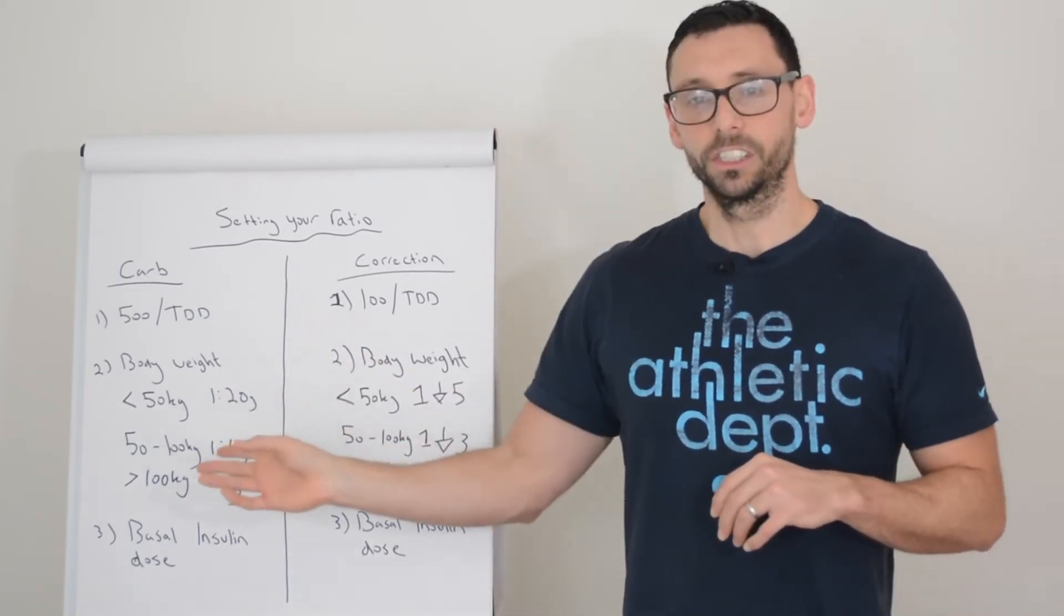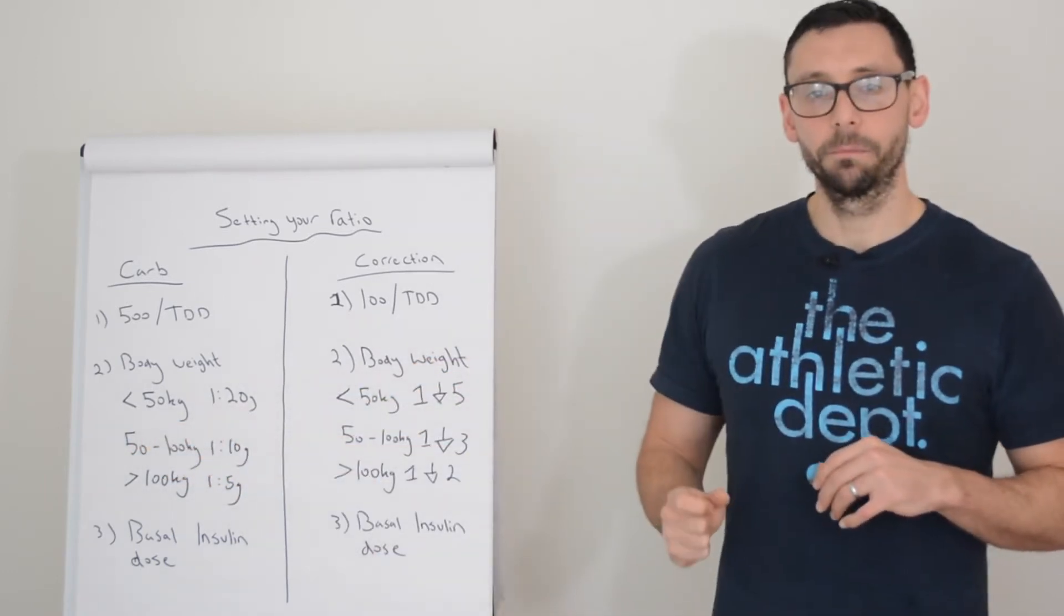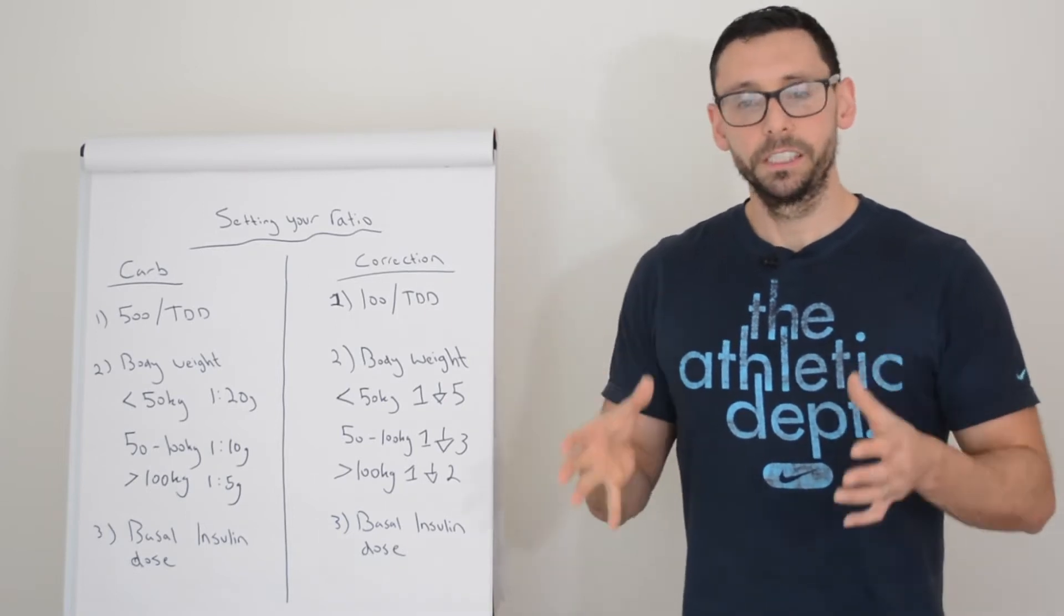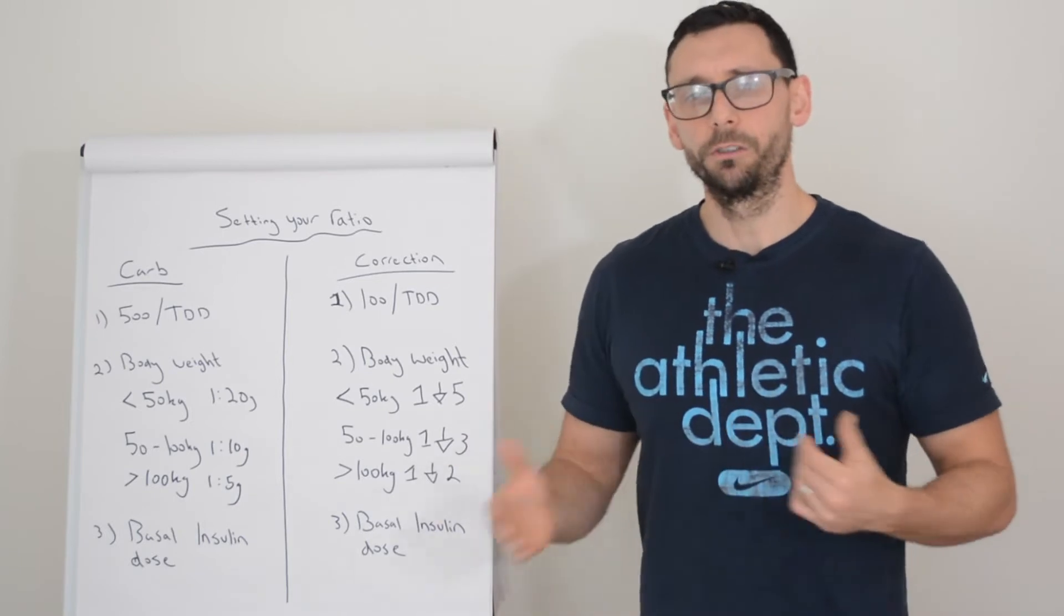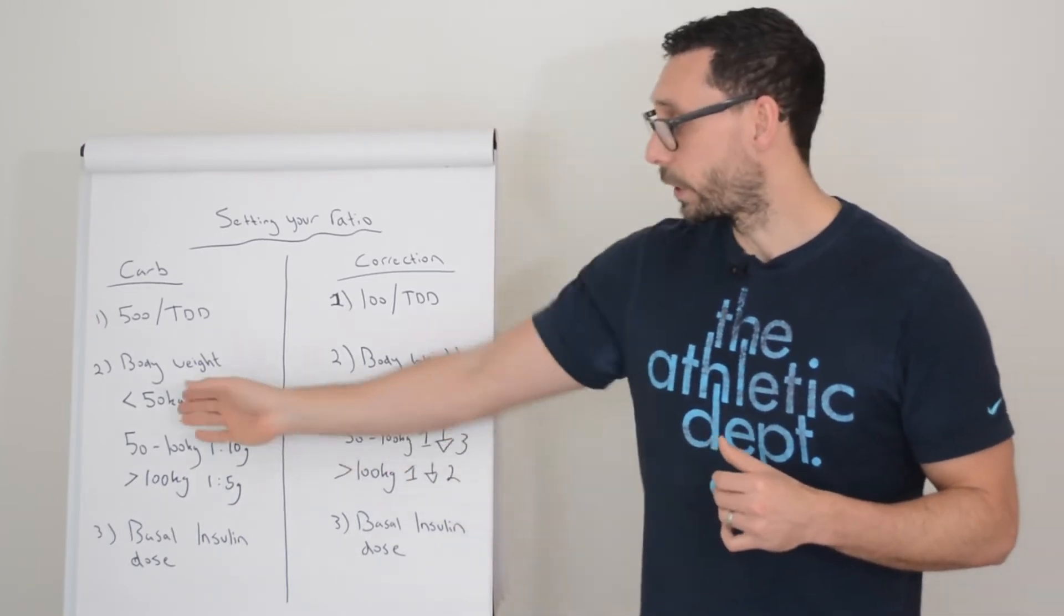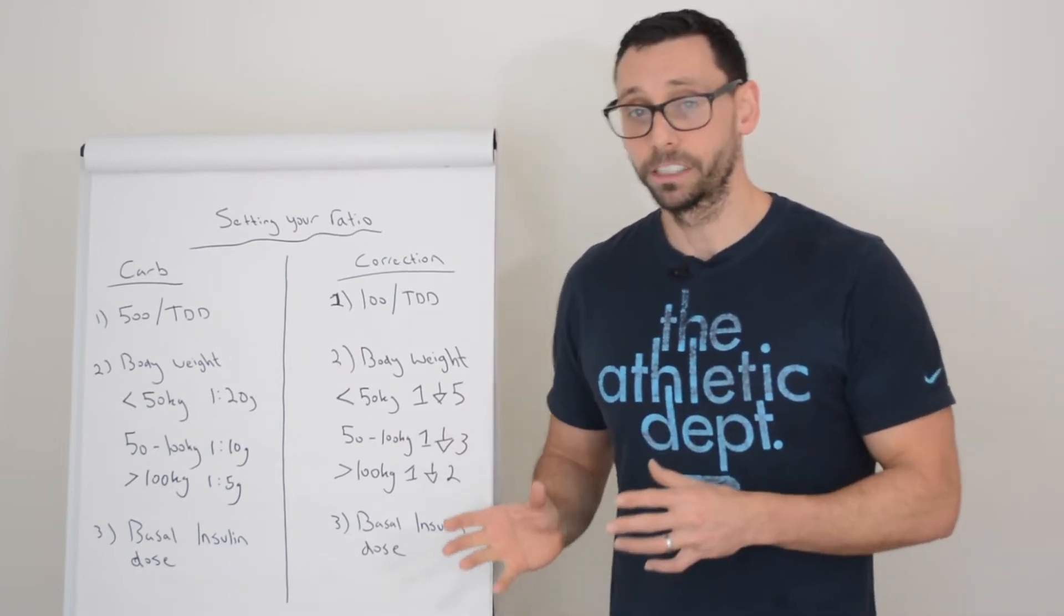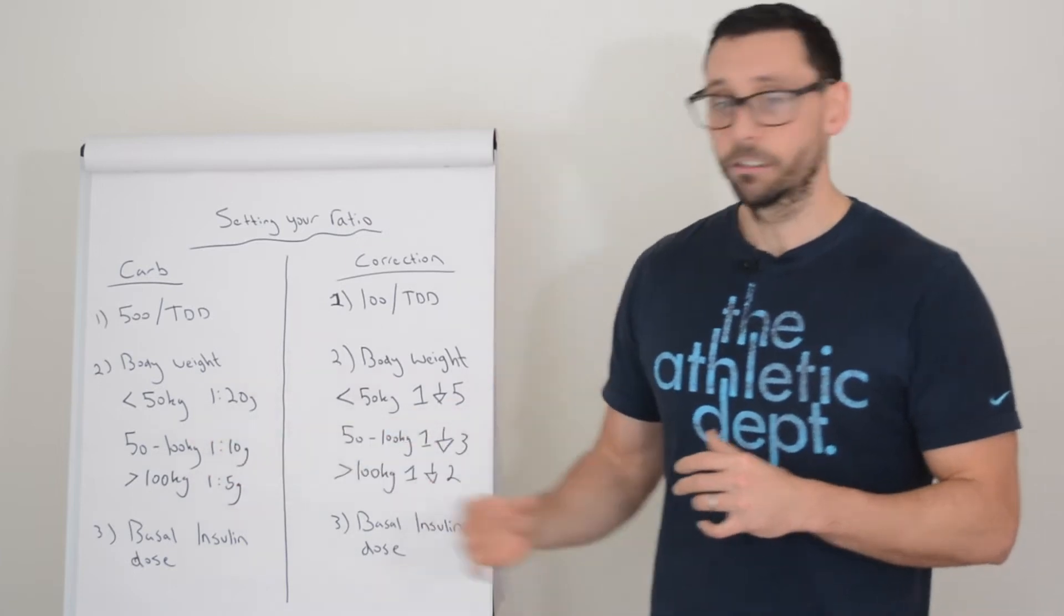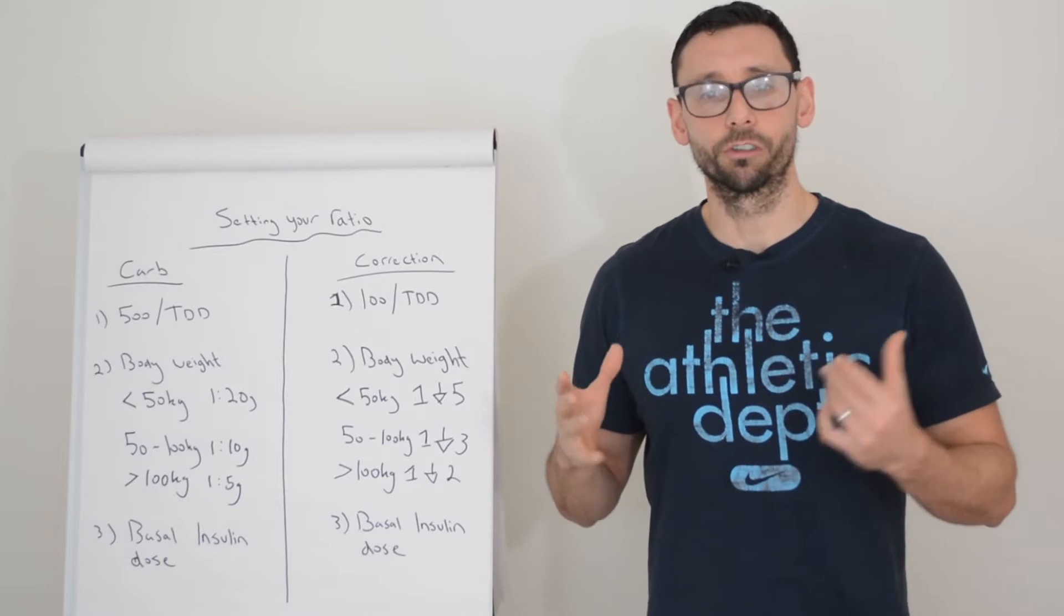Whereas if you weigh between 50 and 100 kilograms, then this gives us your pretty basic 1 to 10 grams carbohydrate ratio. This is what we usually start people off with anyway, unless there's a reason not to, like they weigh under 50 kilograms or we can see they're very sensitive to the insulin that we're already giving them. But 50 to 100 kilograms, a good starting point is 1 to 10 grams, and then you can fine tune it as you start to see the glucose trends.